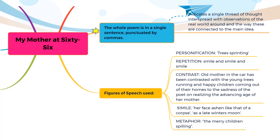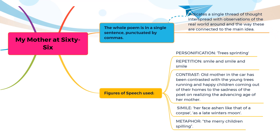As discussed previously, the whole poem is in a single sentence punctuated by commas — it is called enchantment. It is used in poetry to trick a reader; poets lead their readers to think of an idea, then move on to the next line, giving an idea that conflicts with it. My Mother at 66 follows a single line of thought and switches between the physical and emotional worlds with great fluidity.